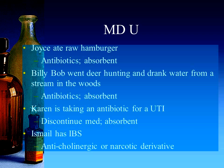For Joyce, who ate raw hamburger — likely E. coli — an antibiotic to treat the organism plus an absorbent to help absorb the intestinal irritant and relieve her diarrhea symptoms. For Billy Bob, contaminated stream water suggests bacteria or protozoa, so again an antibiotic to eradicate the organism, plus an absorbent in the meantime to bind the irritant and alleviate his symptoms.